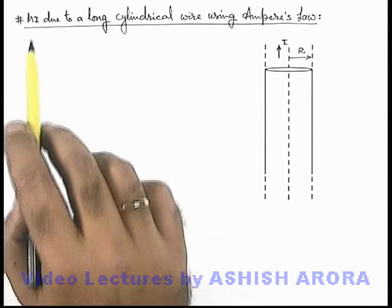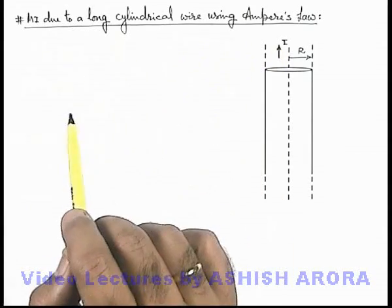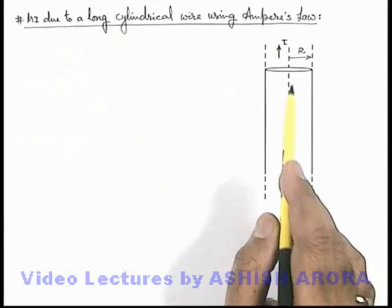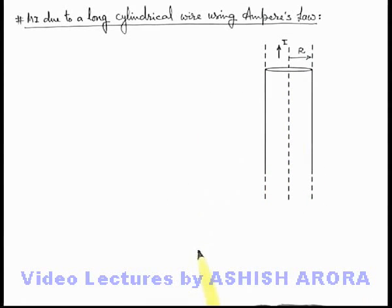Let us now calculate the magnetic induction due to a long cylindrical wire using Ampere's law. Here you can see it is a long cylindrical wire with cross-sectional radius R and it is carrying a current I.